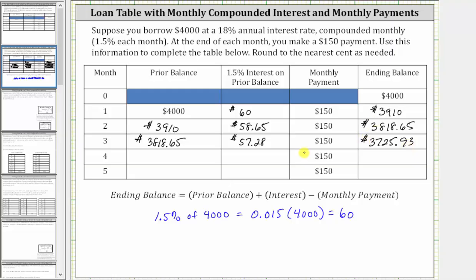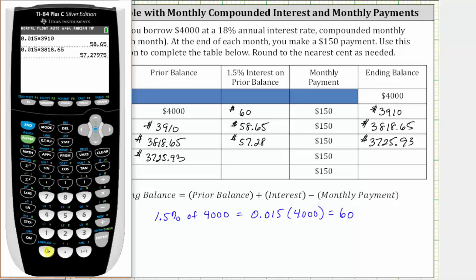This becomes the prior balance for month four. Then you are charged 1.5% interest on this balance. Going back to the calculator, to the nearest cent, you are charged $55.89 of interest during month four.